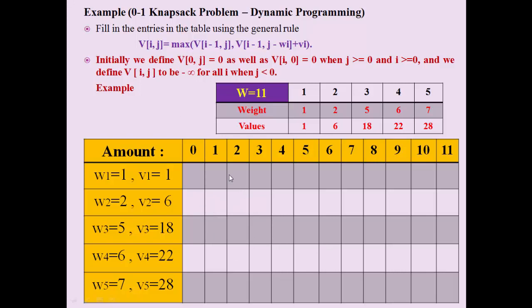We fill the matrix using the knapsack equation along with three conditions. First, if i equals 0, we fill 0. Second, if j equals 0, we fill 0. Third, if j is less than 0 (negative), we place a negative sentinel symbol, which represents the largest negative value. These conditions govern how we initialize and fill the table.